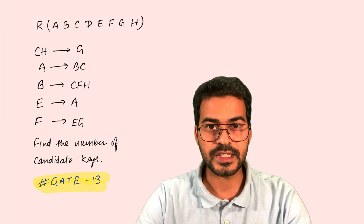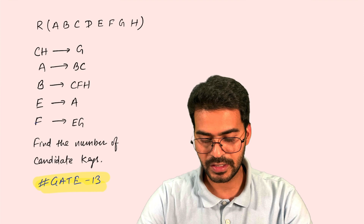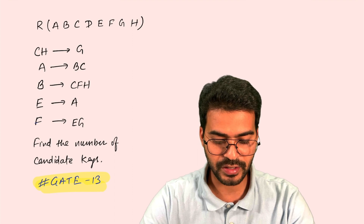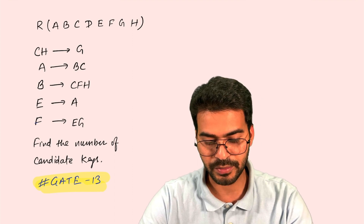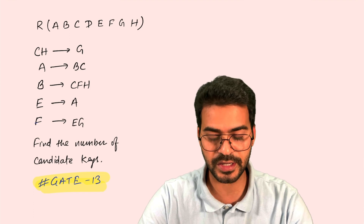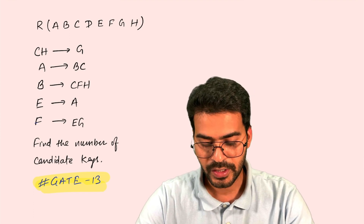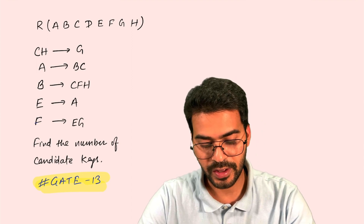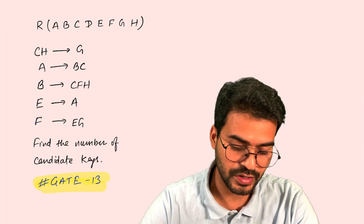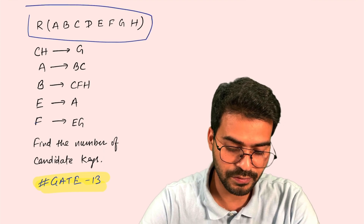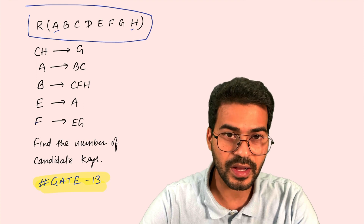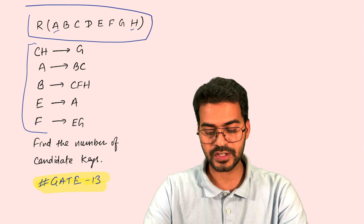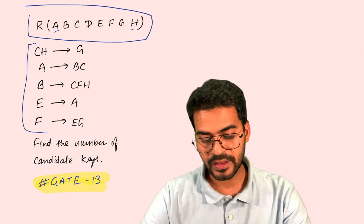This is an example taken from the GATE 2013 exam. The question was: a relation R with attributes A to H was given, some functional dependencies were given, and you were asked to find out the number of candidate keys. So this says R is a relation with attributes A to H — that is, R is a table with attributes A to H. These are the functional dependencies defined, and then you find candidate keys.